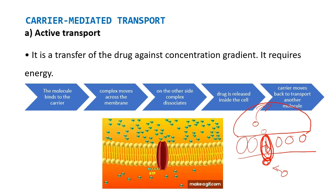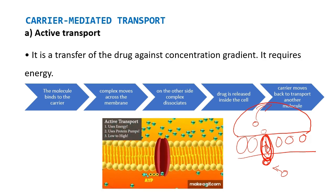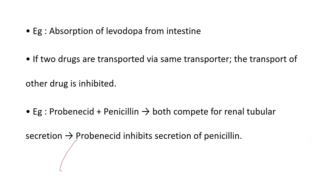You can see this process in the picture as well. An example is absorption of levodopa from the intestine. If two drugs are transported via the same transporter, the transport of one drug is inhibited. So remember, the transporter should not be the same, or else transport of one drug will stop. An example is probenecid plus penicillin — both compete for renal tubular secretion, and probenecid inhibits the secretion of penicillin.